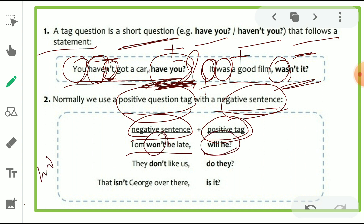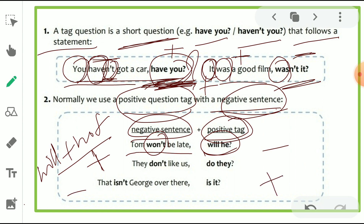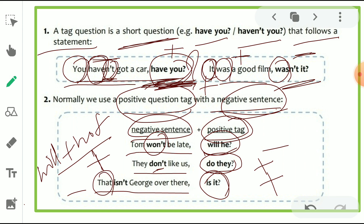For a positive sentence, we have to use a negative tag. Similarly, if the sentence contains a negative, we have to use a positive tag. For example: 'They don't like us, do they?' — here the sentence is negative, so the tag is positive. And: 'That isn't George over there, is it?' — here 'that' is used as 'it.' Keep in mind — it's very important to know.